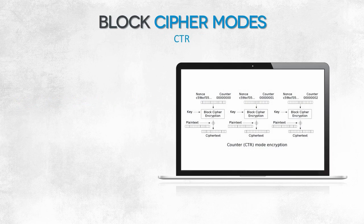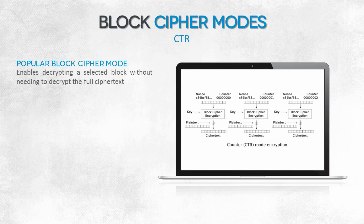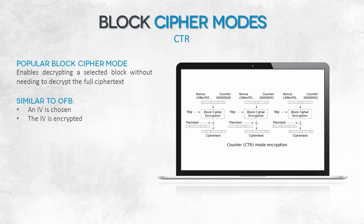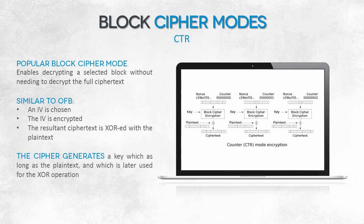The last mode we'll mention is the counter mode, CTR. This mode of operation has gained wide popularity. One of its strengths is that you can decrypt a selected part of the ciphertext — you don't have to decrypt the whole of it. The idea is similar to the previously mentioned modes: after selecting an initialization vector, encrypt it to make the key longer, and then combine it using the XOR operation with the plaintext.